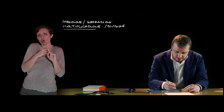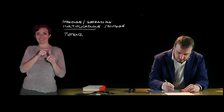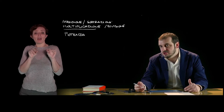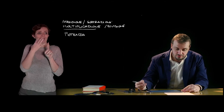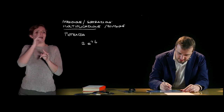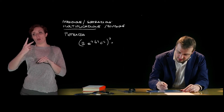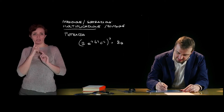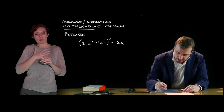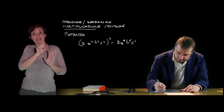In analogia è possibile definire la potenza di un monomio come quel monomio che ha come coefficiente la potenza del coefficiente e come parte letterale la potenza della parte letterale. Un esempio: 2a alla terza, b alla seconda, c alla quarta, tutto quanto elevato alla terza, diventa quindi 2 alla terza, quindi 8, a alla terza tutto alla terza, che per le proprietà delle potenze diventa a alla nona, quindi b alla sesta, c alla dodicesima.